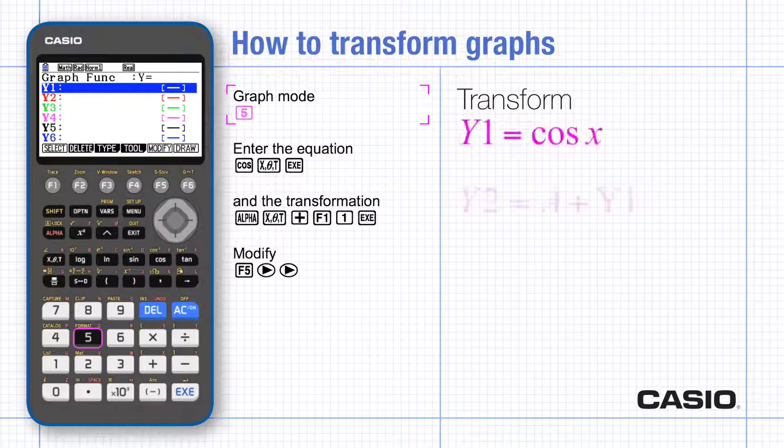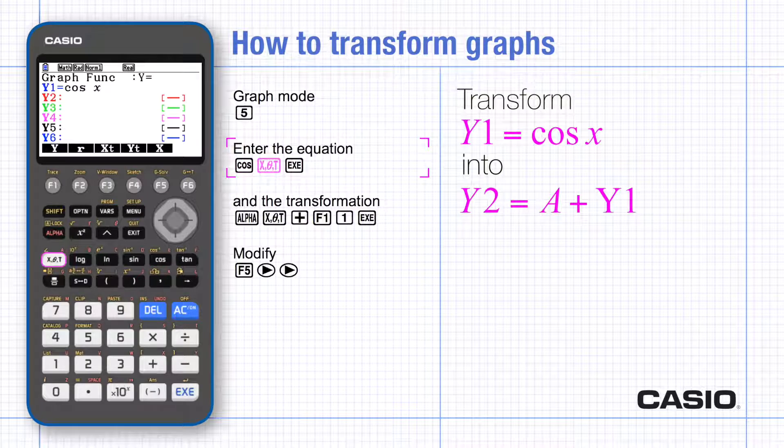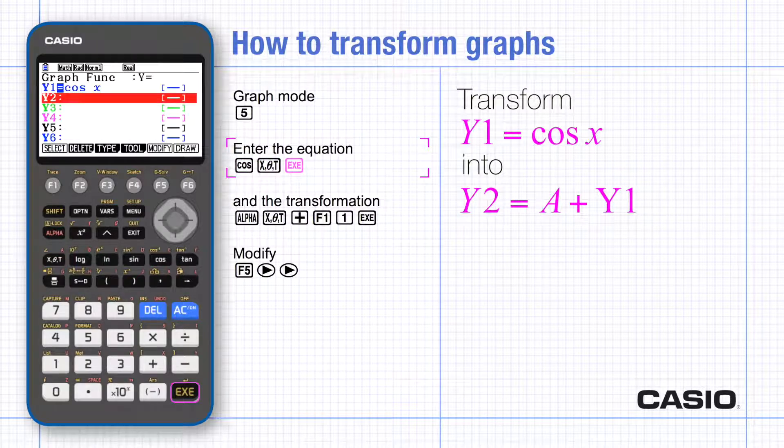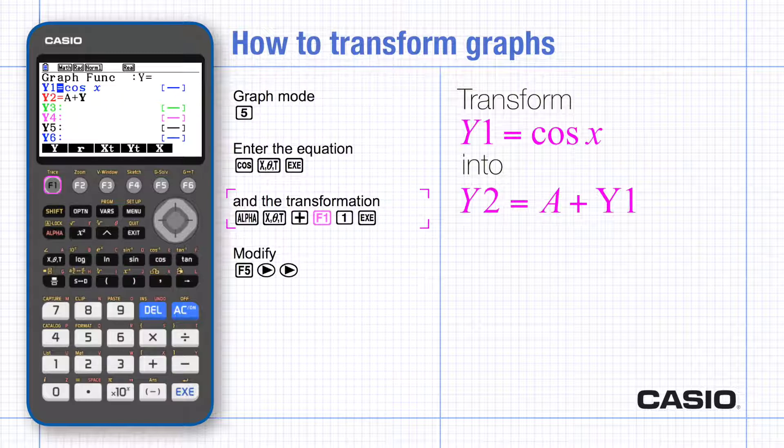So open graph mode and in y1 type the equation of the graph to be transformed and press enter. For y2 enter a constant using the alpha key then f1 for function y and enter one to show which function is being transformed.